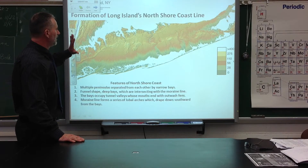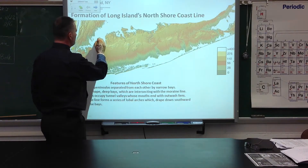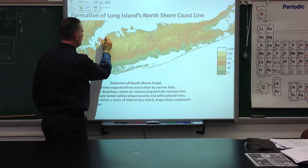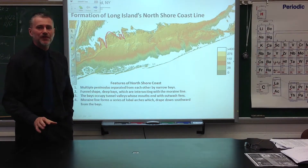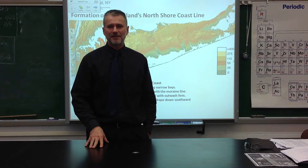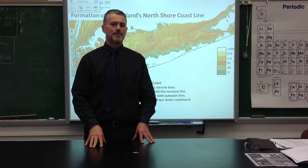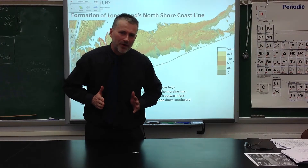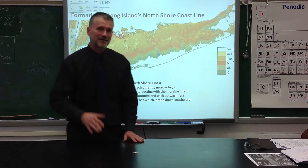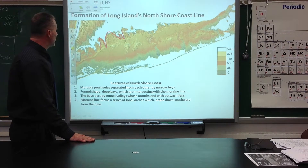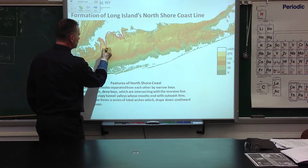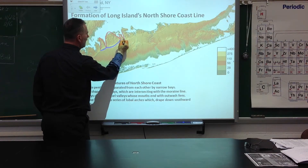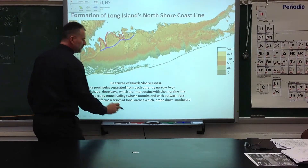This is the DEM map of Long Island, put together by Bennington. What we see here is those peninsulas, which are separated by bays. Those bays occupy tunnel valleys. Tunnel valleys are valleys which are carved by pressurized water underneath the glacier, which runs to the outskirts of the glacier. What else you can see here is our moraine, which is pierced by those valleys, and the moraine drapes from one valley to another.